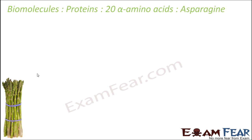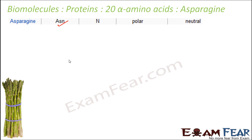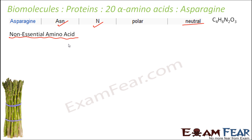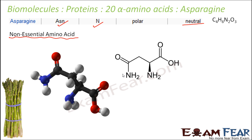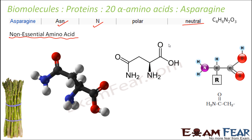Let us look at the third amino acid, that is asparagine. The three-letter form is ASN and the one-letter symbol is N. It is polar and neutral because it also has the same number of amine and carboxylic groups. It is a non-essential amino acid, synthesized inside the body. Asparagine was the first amino acid to be isolated, and it was isolated from asparagus, which is why it was named asparagine. Most amino acid names are quite trivial and are named either after the source from which they were extracted or the food where they are present.